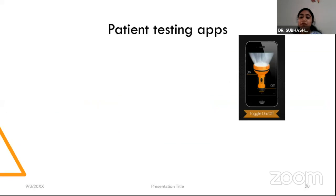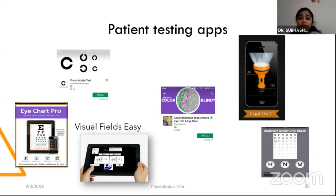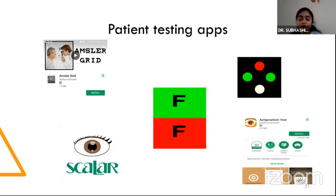Many of us are on COVID duties or working in peripheral centers, and patient testing apps — starting from a simple torchlight app — can help recreate an ophthalmology OPD in any condition. Several apps are available for vision testing, color blindness, contrast sensitivity, Amsler grid, duochrome test, and Worth 4-dot test. All these tests are just a tap away.